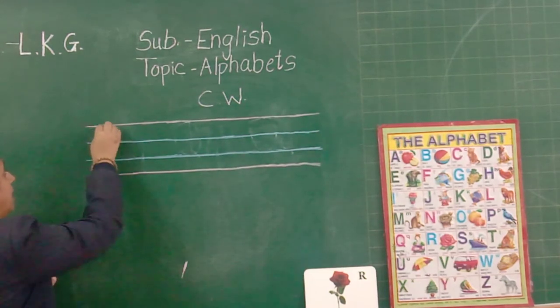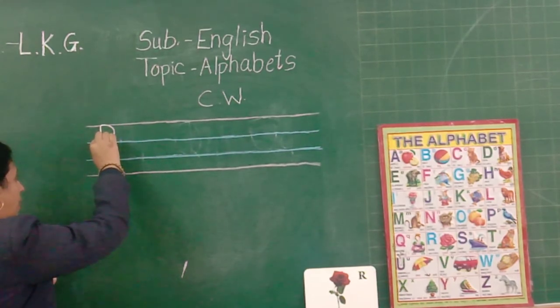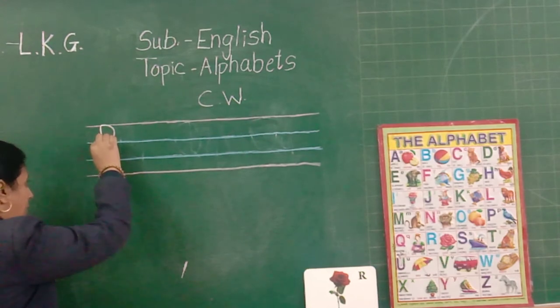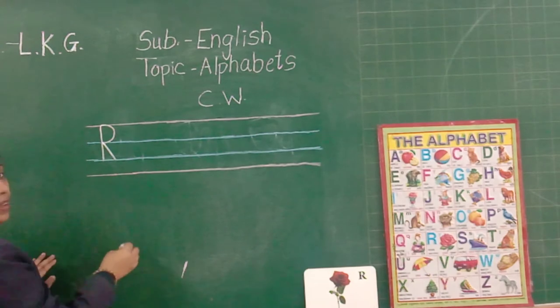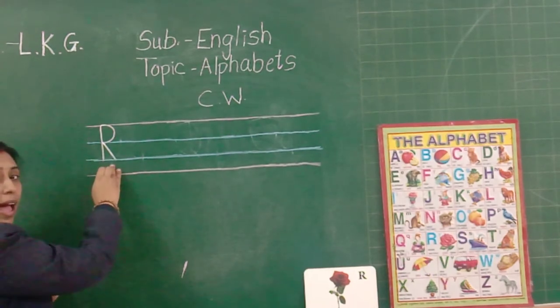Standing line, curve on the first blue line, from first blue line to second blue line, slant. This is capital R.